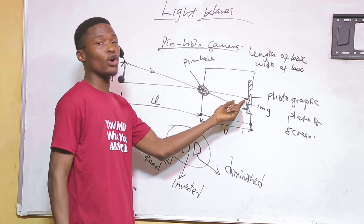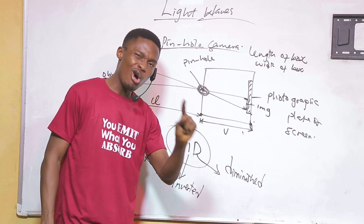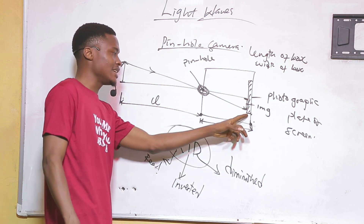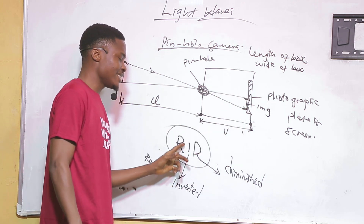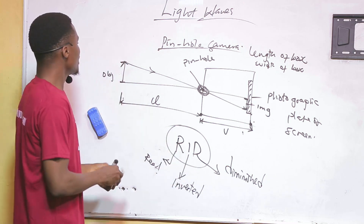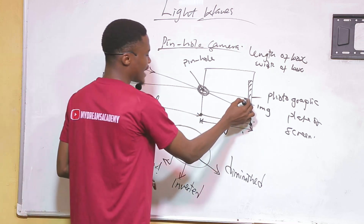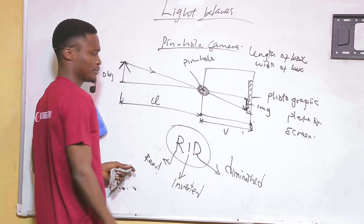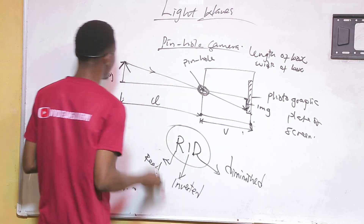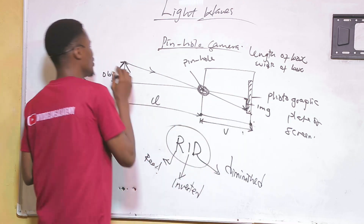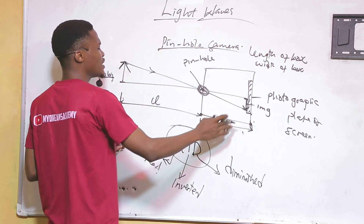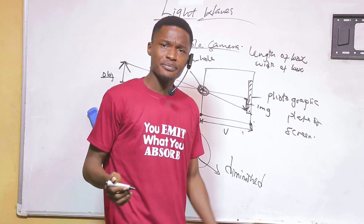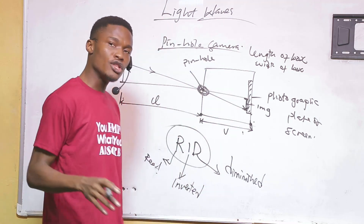A real image means it can be captured on a screen — because we captured the image on the screen at the back of the box, the image is real. Inverted means the image is upside down — the object's arrowhead points up but the image's arrowhead points down. Diminished means the image is smaller than the object. If the image were bigger than the object, we would say it is magnified.